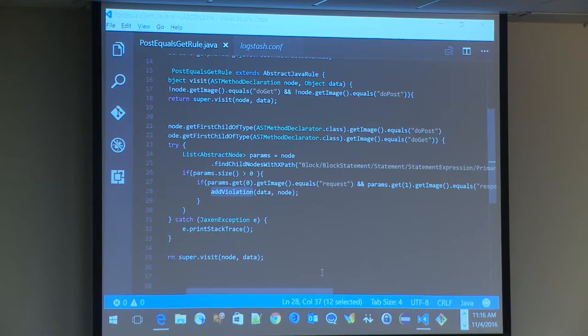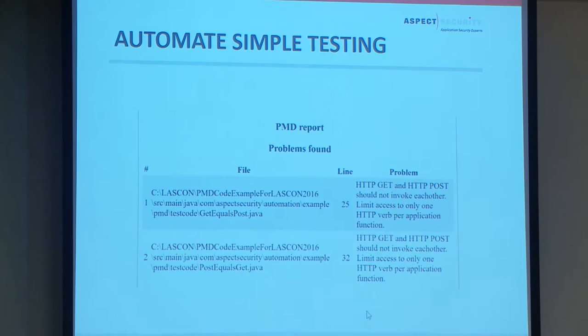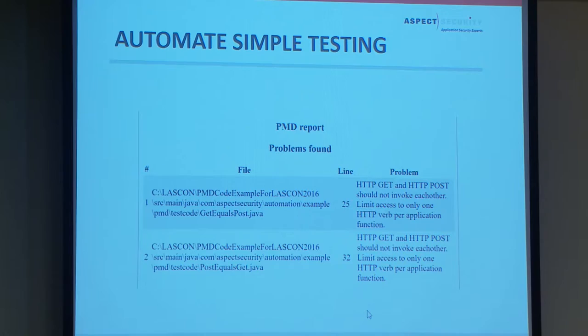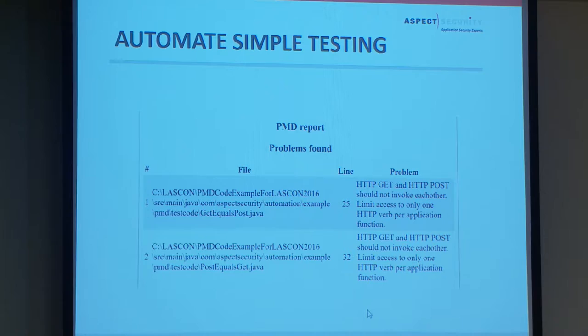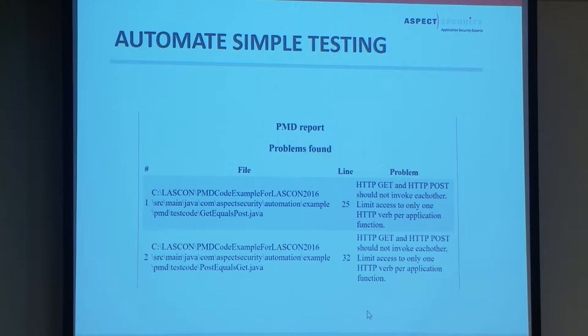When we run this rule, the output shows the file names, line numbers, and the rule information flagging the vulnerability. I created two test files: 'GetEqualsPost' and 'PostEqualsGet'. If your developers are already running PMD, this will appear alongside whatever other functional or code quality bugs they're already detecting. This is what I call security for free — write rules for tools developers already use, and add security juice to them.